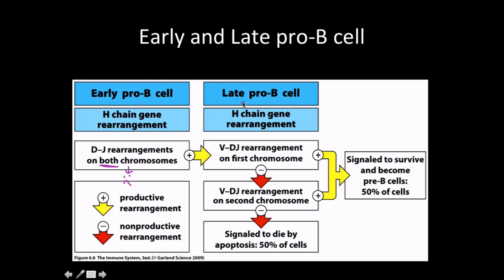Then we have V combining with the DJ segments. Hopefully this works on the first chromosome—either maternal or paternal—because remember we have two sets of chromosomes. If successful, we survive and become pre-B cells; 50% of cells do this. If the first try doesn't work, we have the other chromosome to try the same rearrangement. If that works, great; if not, we're killed by apoptosis. 50% will die, 50% will pass on.